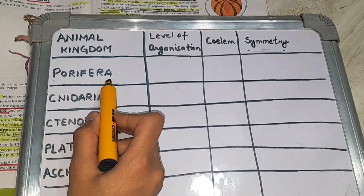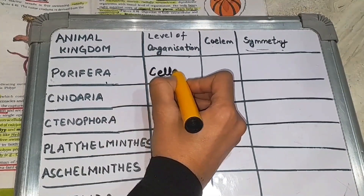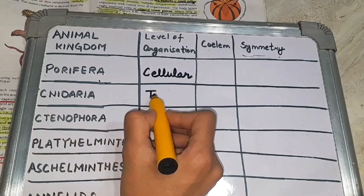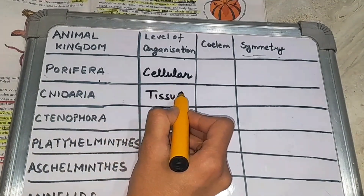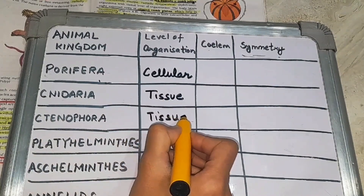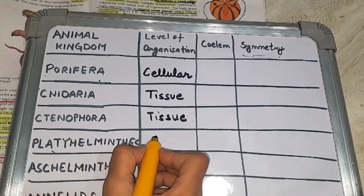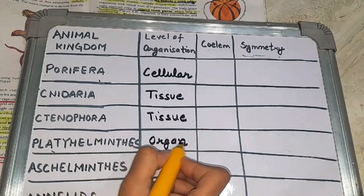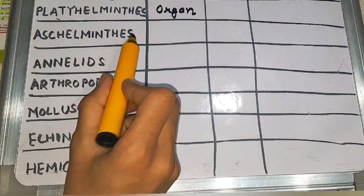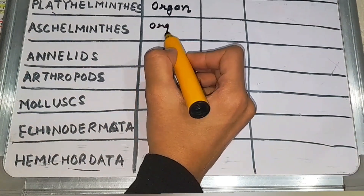The first phylum is Porifera. The level of organization of Porifera is cellular. Next is Cnidaria, which has tissue level of organization. Then Ctenophora — again tissue. So both Cnidaria and Ctenophora have tissue level of organization. Next we have Platyhelminthes which has organ level of organization. Then from Aschelminthes till Hemichordata, all have organ system level of organization.